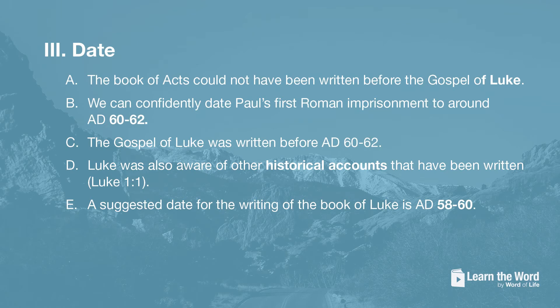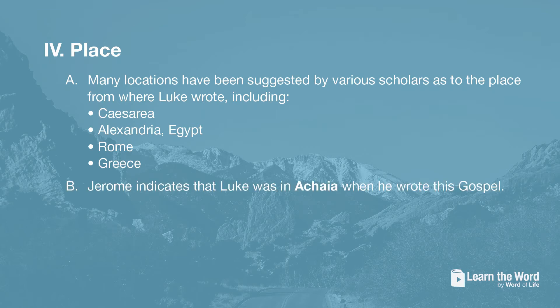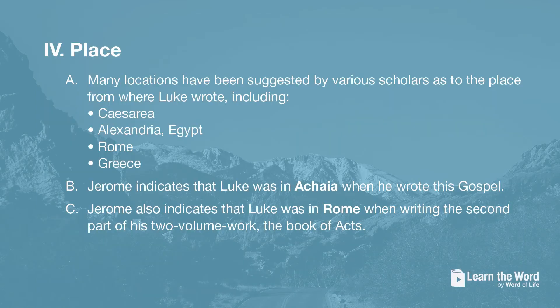A suggested date for the writing of the Gospel of Luke is A.D. 58 to 60, sometime before the book of Acts was written, but probably not a lot of time had transpired between the completion of Luke and the beginning of Acts, as he records these events for the same person — Theophilus. Many locations have been suggested by scholars as to where Luke wrote, including Caesarea, Alexandria in Egypt, Rome, and Greece. Jerome indicates that Luke was in Achaia — the southern region of modern-day Greece — when he wrote this Gospel, and that Luke was in Rome when writing the book of Acts.